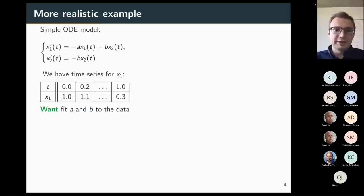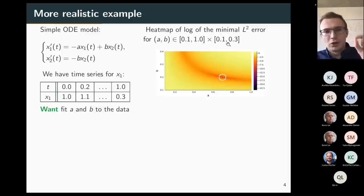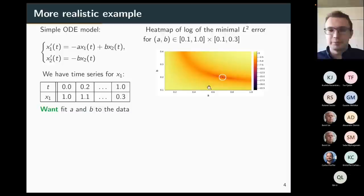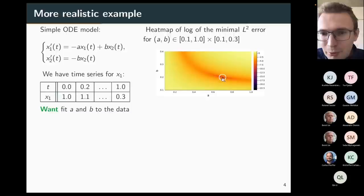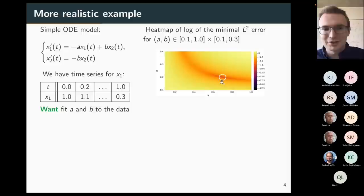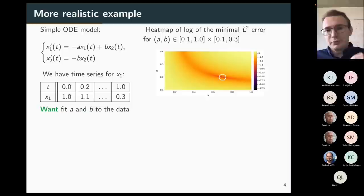To do this, let me try different values of A and B and plot the error as a heat map. For each value of A and B in these intervals, I find the optimal initial condition for X2, compute the L² error, and plot the log of the error. There is a small dark point in a blue circle — this point has error around 10 to the minus 22, essentially zero — corresponding to values B = 0.2 and A = 0.7, which are exactly the values I used to generate the data. From this picture, it's tempting to say we found them and we can go home.